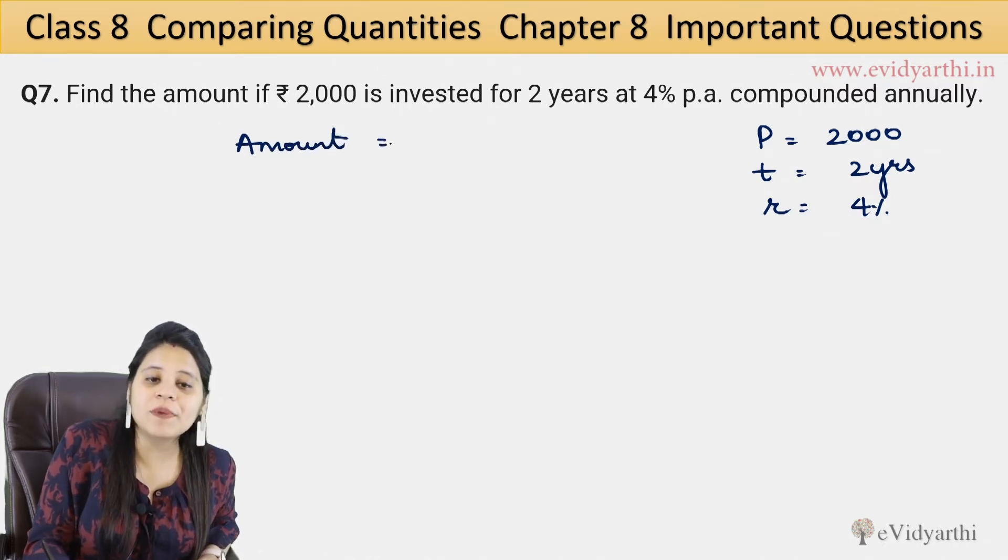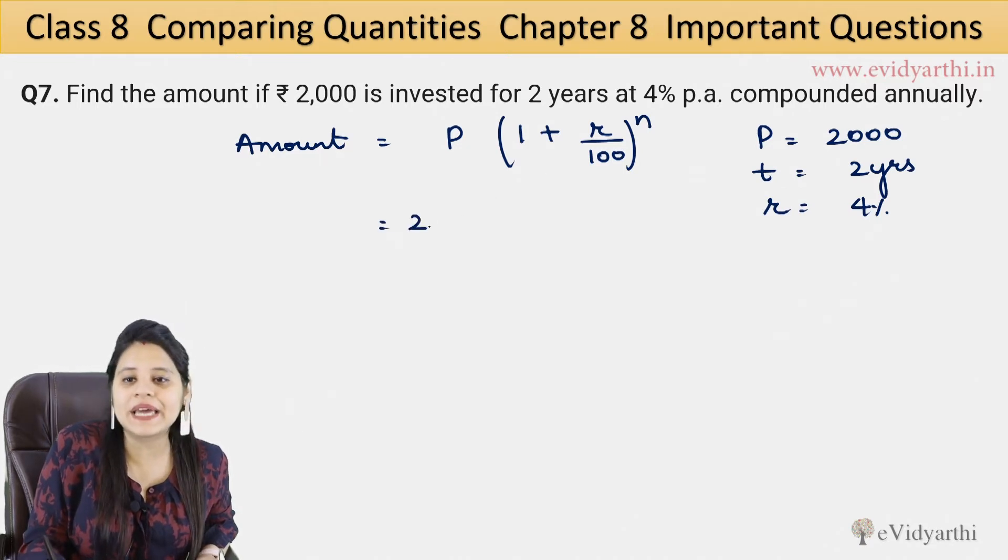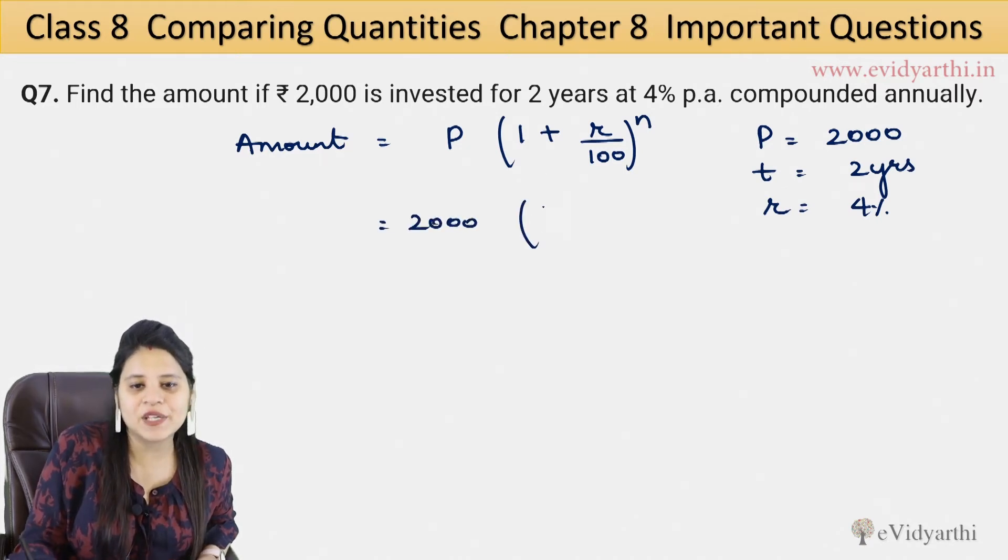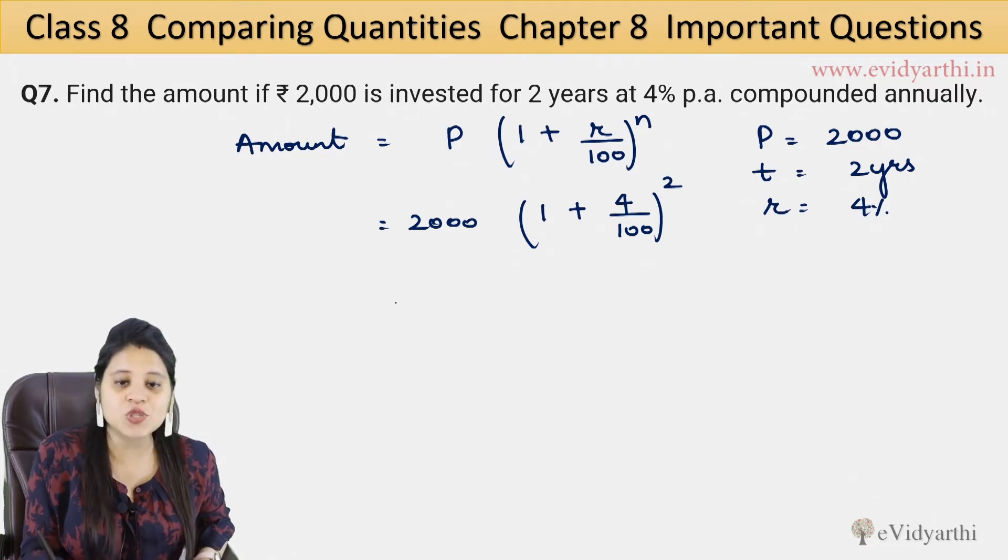So now the formula for amount is Principal times (1 plus R upon 100) to the power N. So the principal is our 2000. This will be 1 plus R upon 100, and N will be 2. Now we have to solve this.